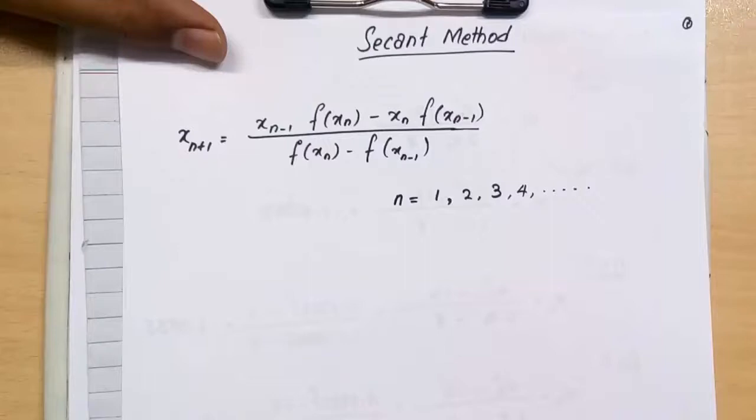The question is, why are we not using the bisection or Newton-Raphson method? First, the bisection method - we avoid it because it is so lengthy. So we go to the Newton-Raphson method.